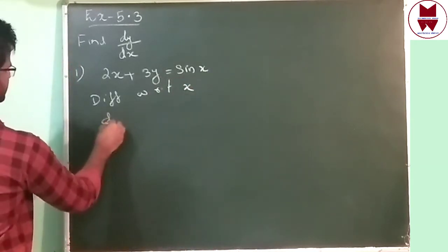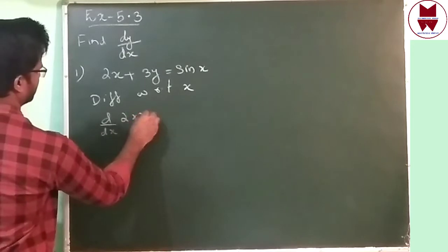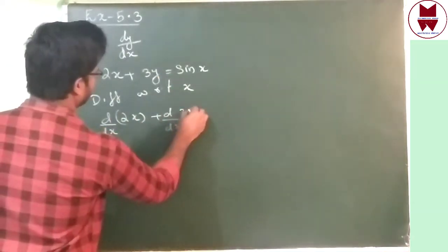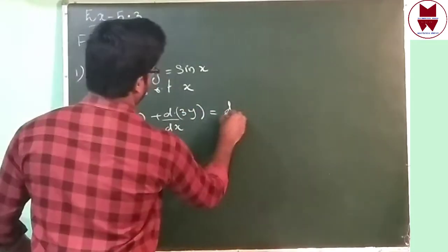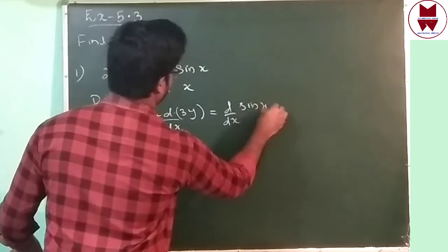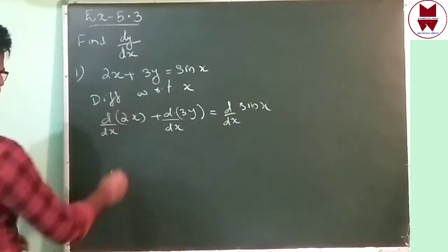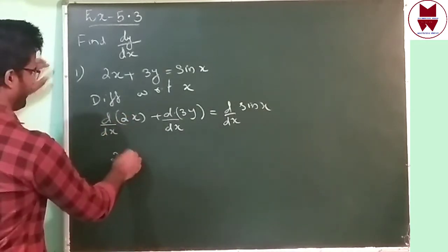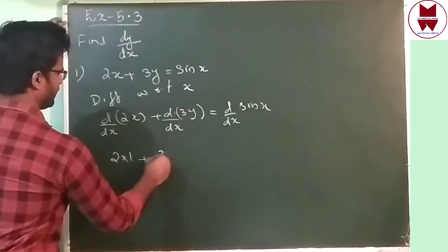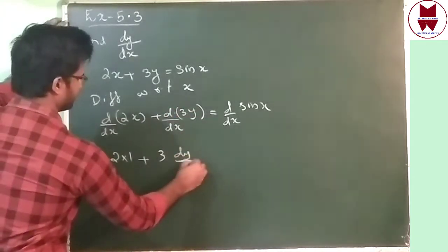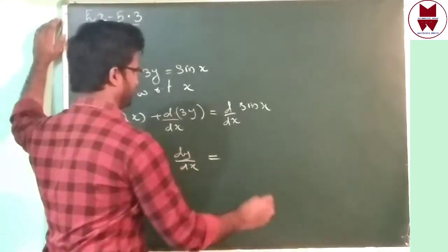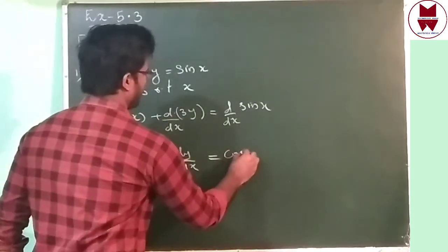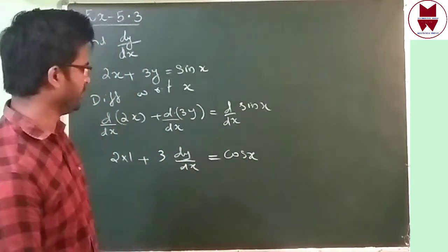I can write d/dx of 2x plus d/dx of 3y equals d/dx of sin x. For d/dx of 2x: 2 is constant, keep it outside, and d/dx of x will be 1. Plus, 3 is constant. Then d/dx of sin x is cos x.